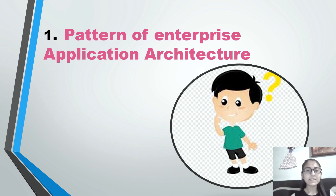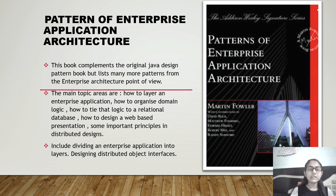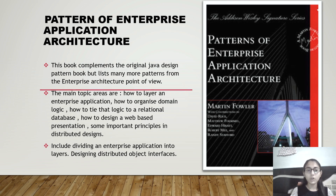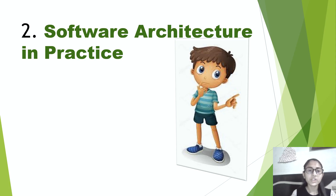The first on the list is 'Patterns of Enterprise Application Architecture.' This is a book that doesn't need any kind of review — it is one of the classics, like the Gang of Four book, which every programmer should read to get knowledge about software architecture. This book complements the original Java design patterns but lists many more patterns from the architecture's point of view. The main topics are: how to layer an enterprise application, how to organize domain logic, how to tie data update logic to a relational database, and how to design web-based presentations and distributed designs.